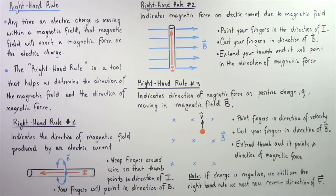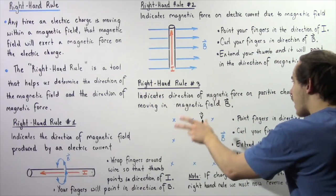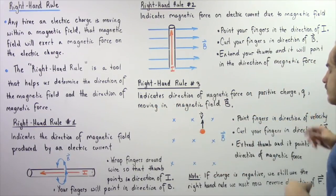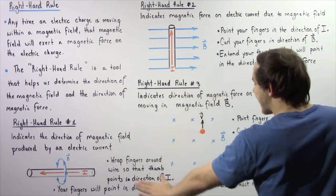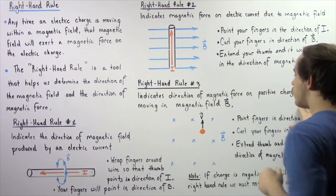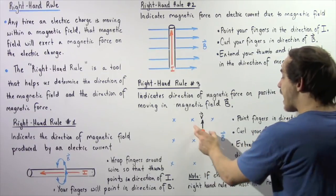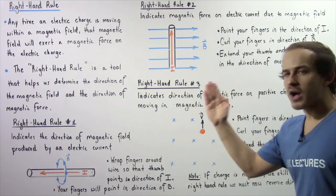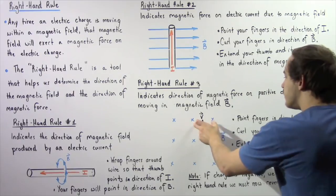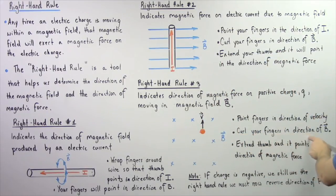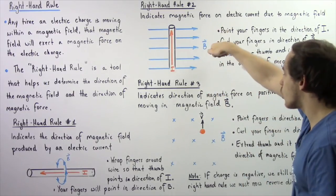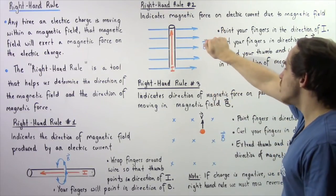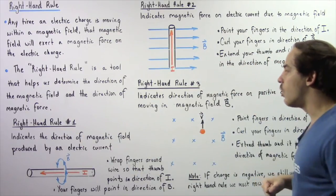Right hand rule number three indicates the direction of the magnetic force that acts on a positive electric charge q moving in a magnetic field B. Suppose we have a uniform magnetic field B pointing into the board, and a positive electric charge moving in a general upward direction. To find the force, we take our right hand, point our fingers in the direction of the velocity — upward — then curl our fingers in the direction of the magnetic field, which is inward. We extend the thumb, and the thumb points in the direction of our magnetic force — in the negative direction along the x-axis.